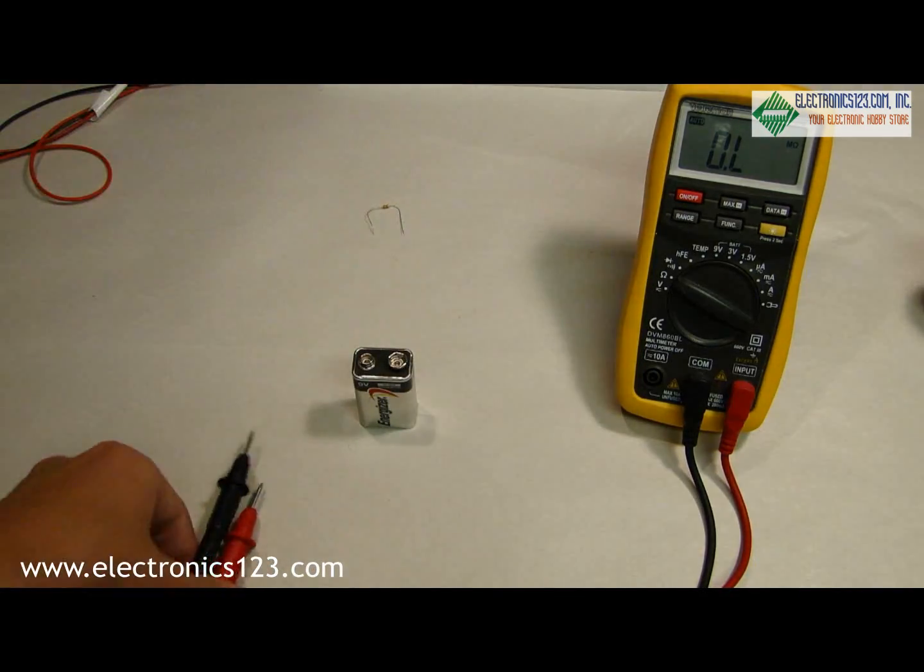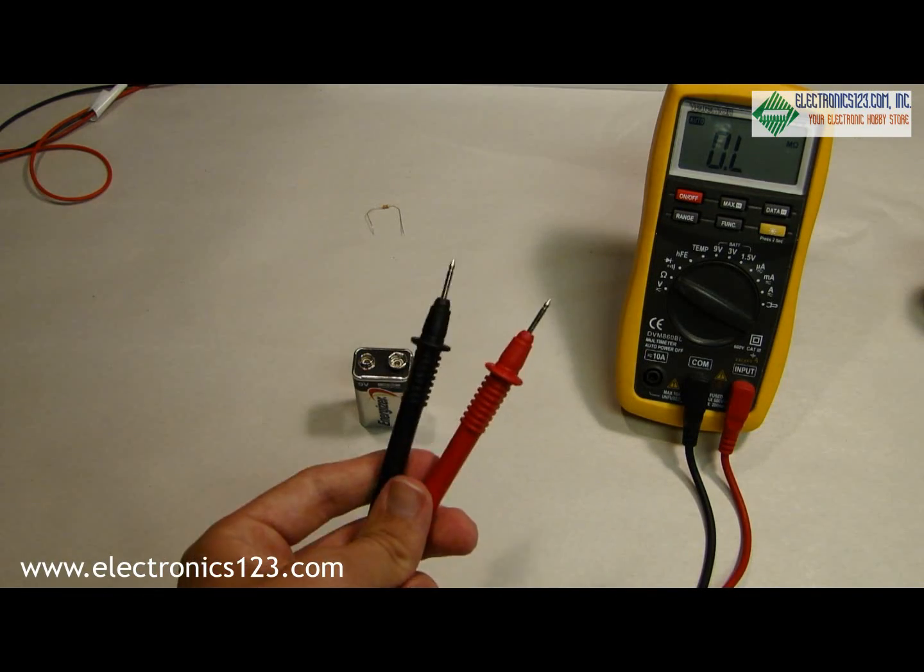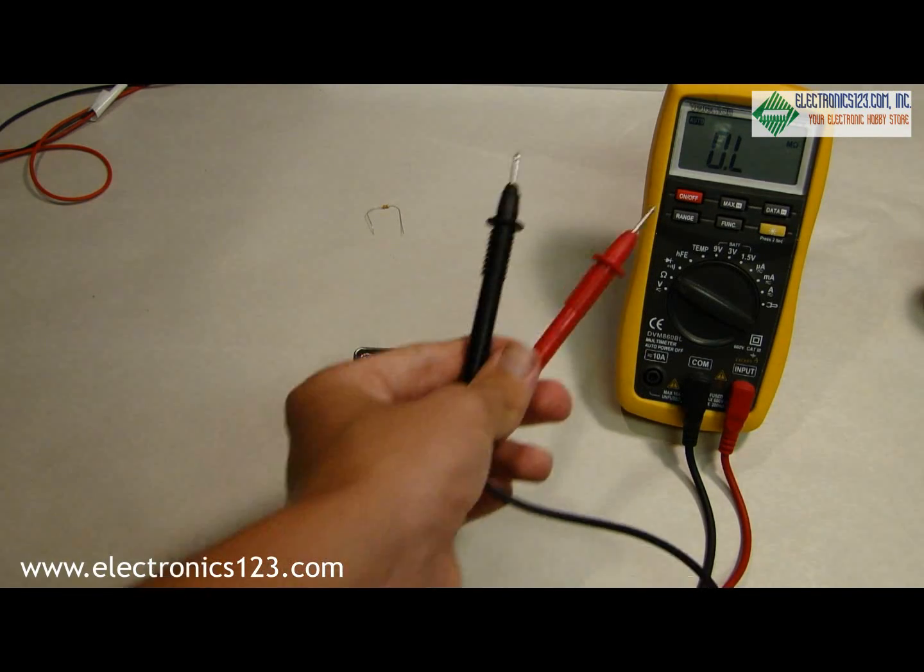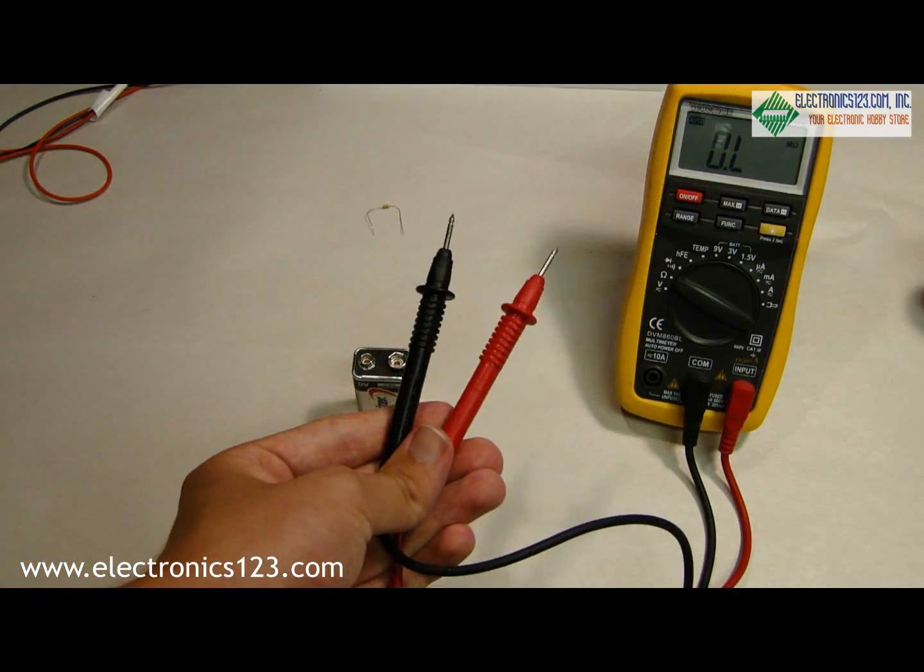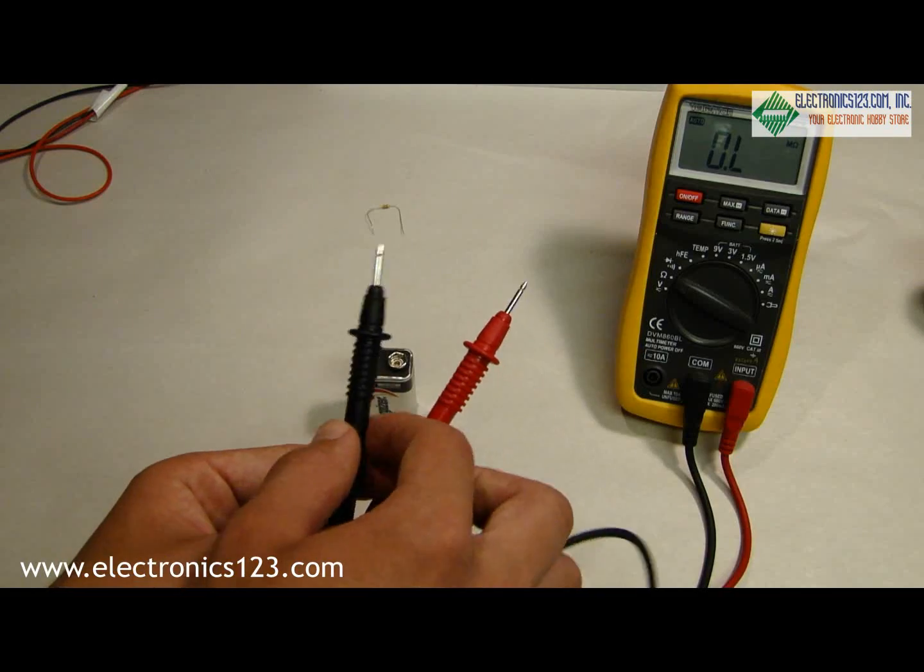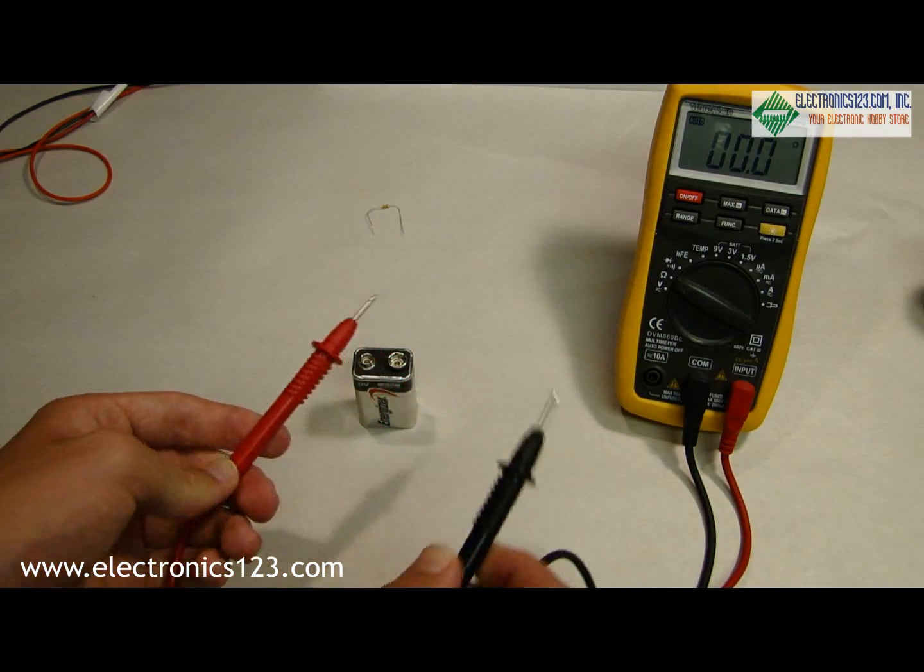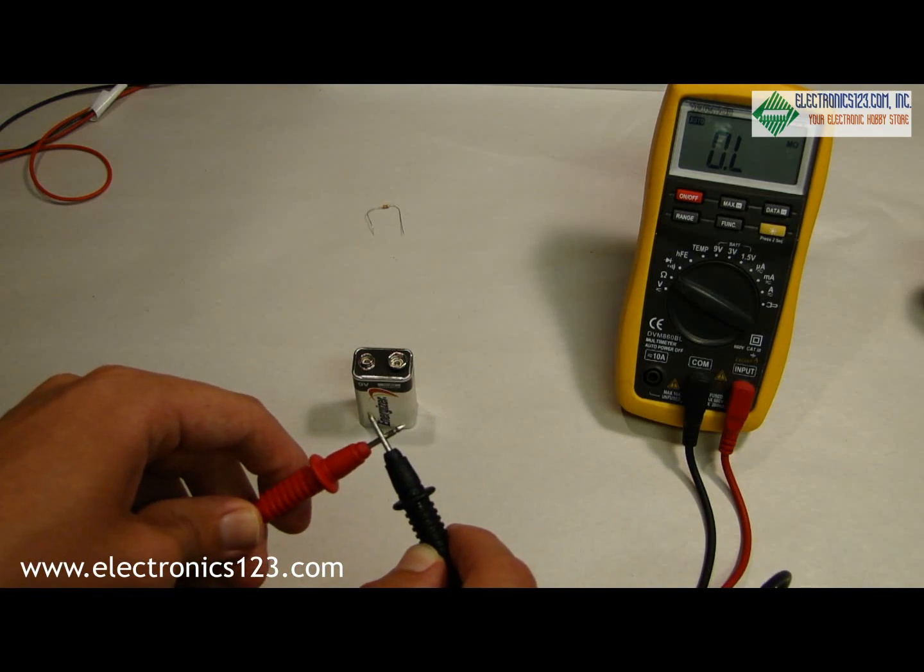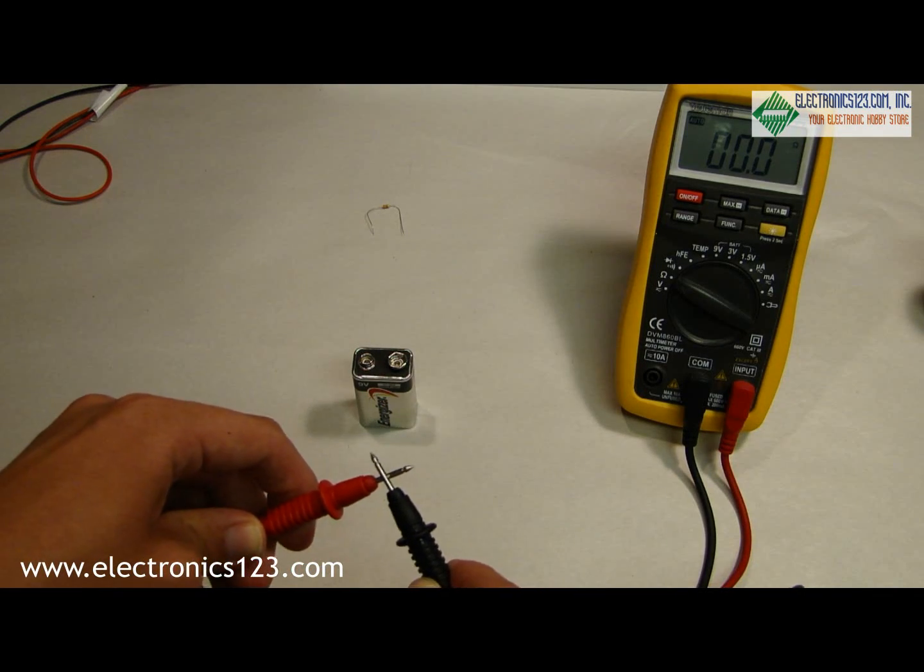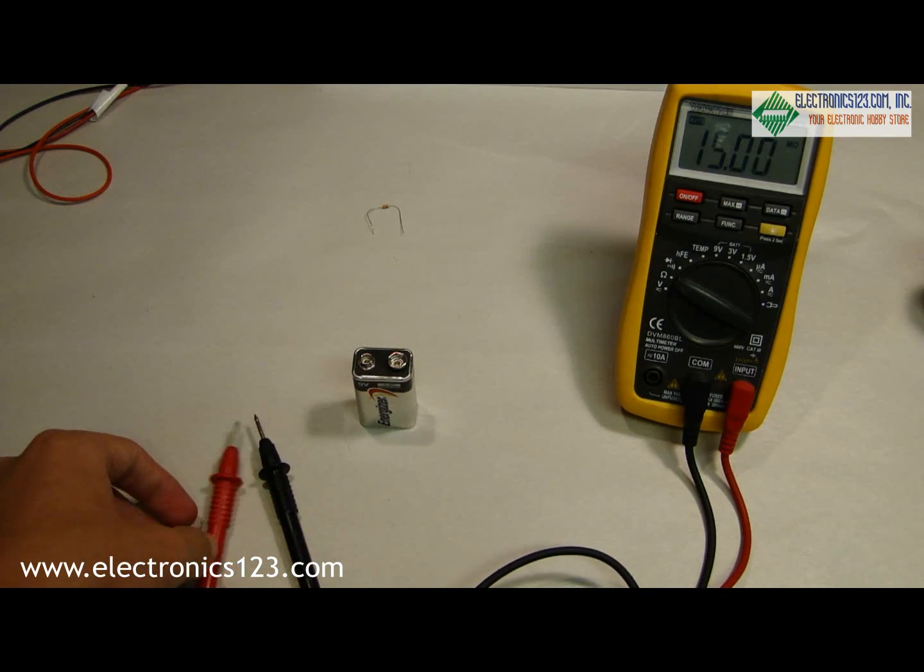The other thing we can check with this is how good a connection we have. When the probes are not connected you'll see that we have this number which is basically reading an infinite number of ohms. If we touch the two together you can see we get 0. Basically this is telling us that when they're apart we have a really bad connection and when they're together we have a really good connection. This is a good way to test switches or to make sure that current's getting to where it needs to go.